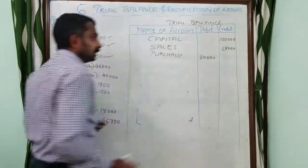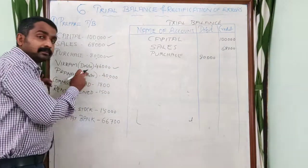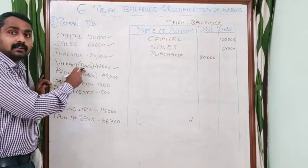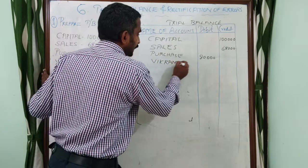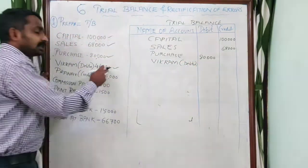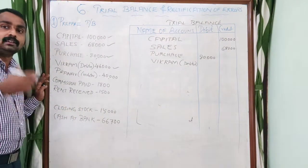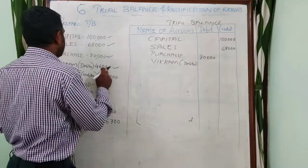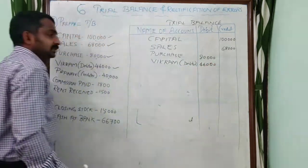Next is Purchase — purchase is 80,000. Purchase is an expense, so the normal balance is debit. We place 80,000 on the debit side. Next is Vikram — in brackets, debtor. Debtor is an asset, and the normal balance for an asset is debit. So the debit balance for Vikram is 46,000.